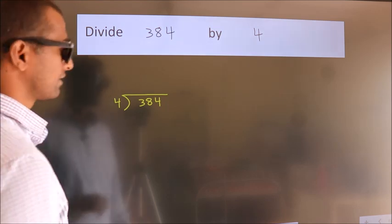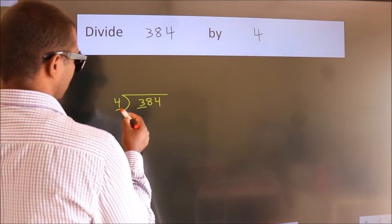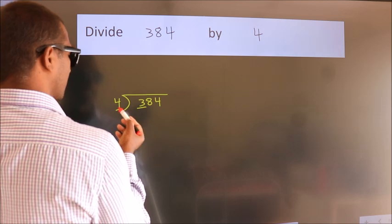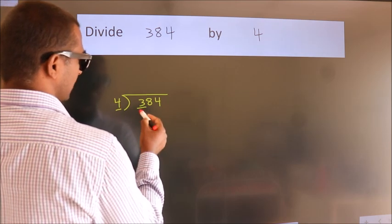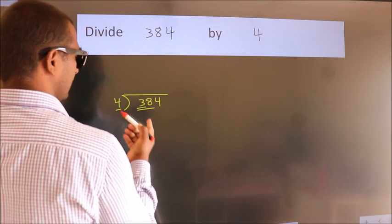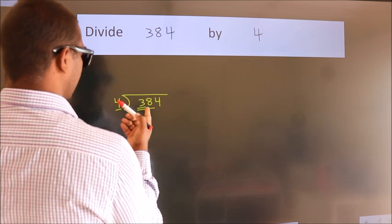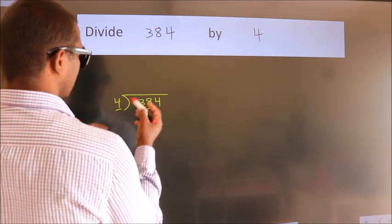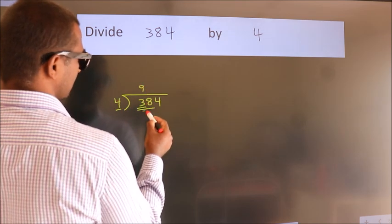Next. Here we have 3, here 4. 3 is smaller than 4, so we should take 2 numbers: 38. A number close to 38 in the 4 table is 4 nines, 36.